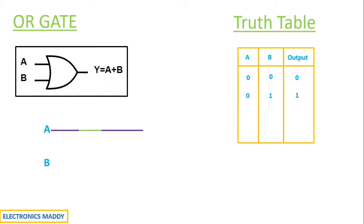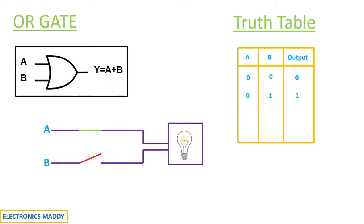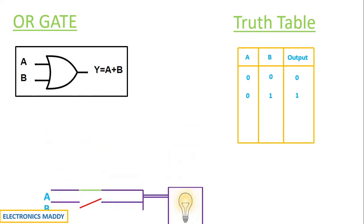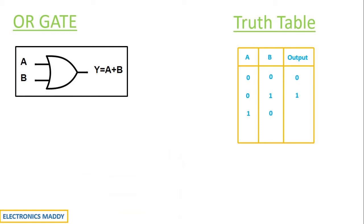Now when A is closed and B is open, the current will still flow through the load and consequently the light glows because of switch A, because it acts as a short circuit. So the truth table corresponding to it is: 1, 0 corresponds to a state of 1.